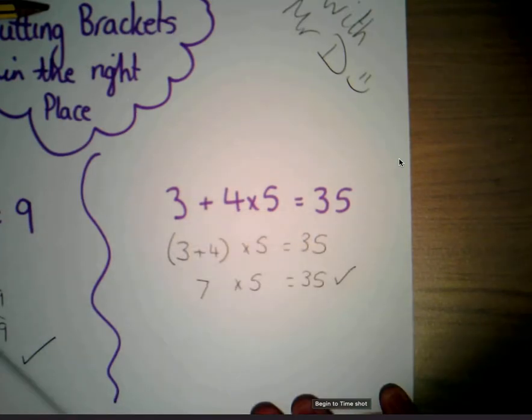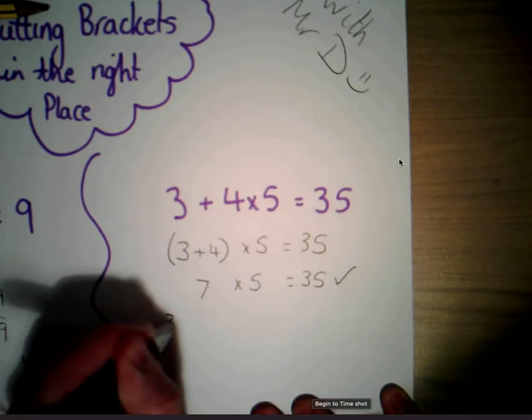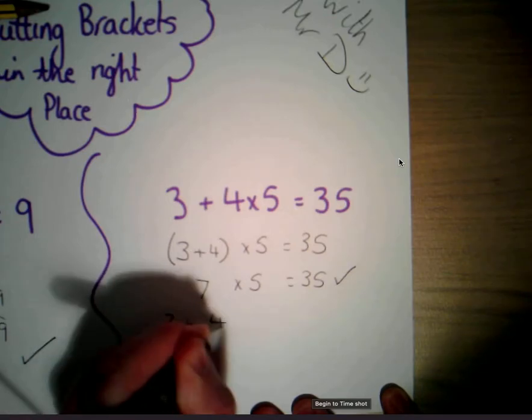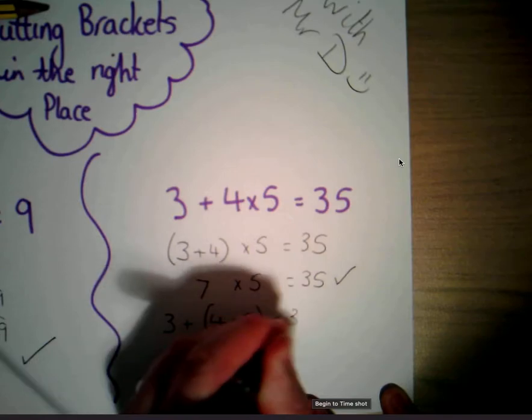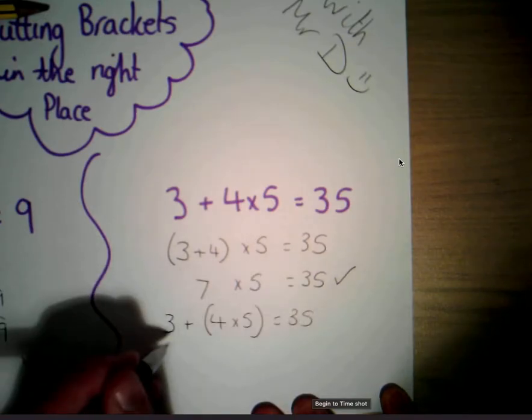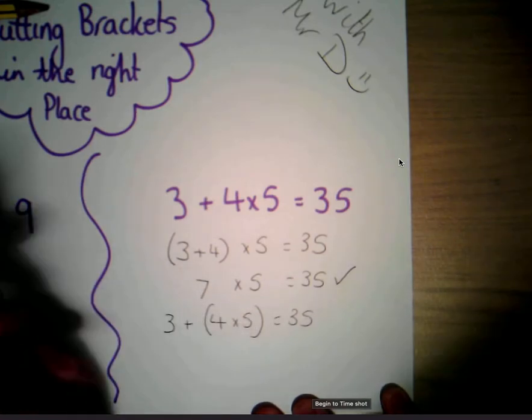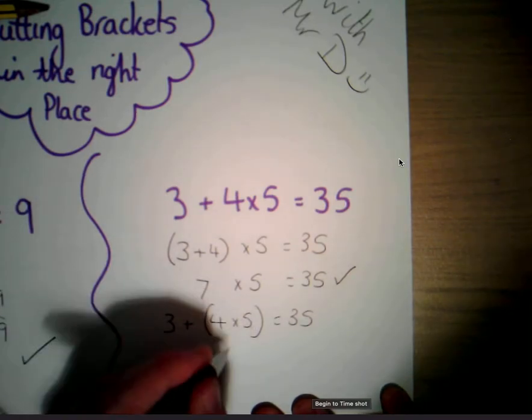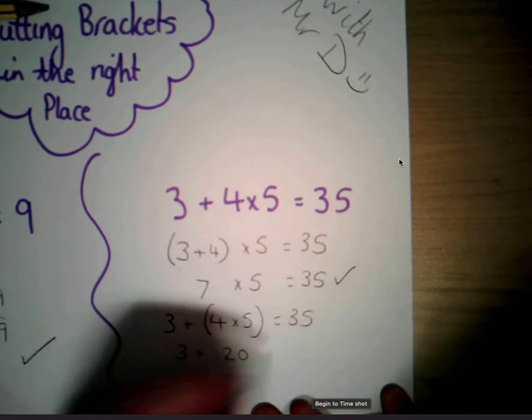So let's try it the other way. This time, three plus four times five equals 35. Leave this bit alone because we're going to deal with the brackets first. Going back to BODMAS, four times five is 20, three plus 20 equals 23.